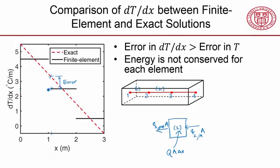is equal to the heat flow going out, which means that this is equal to this, and it's not accounting for the heat being generated in the element.